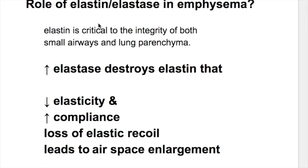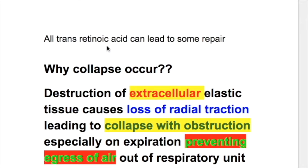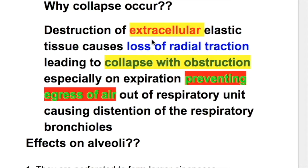What's the role of elastin and elastase in emphysema? Elastin is critical to the integrity of both small airway and lung parenchyma. Increased elastase destroys elastin, which decreases elasticity and increases compliance, and loss of elastic recoil leads to airspace enlargement. All-trans retinoic acid can lead to some repair of damage caused by elastase. Destruction of extracellular elastic tissue causes loss of radial traction, leading to collapse with obstruction especially on expiration, preventing egress of air out of the respiratory unit and causing distension of the respiratory bronchioles.